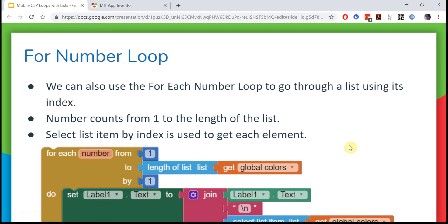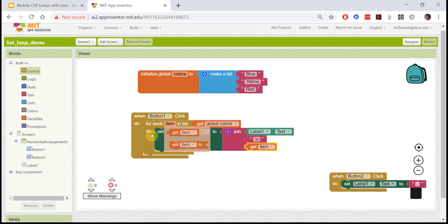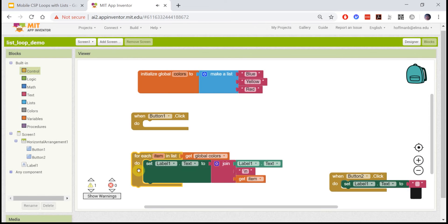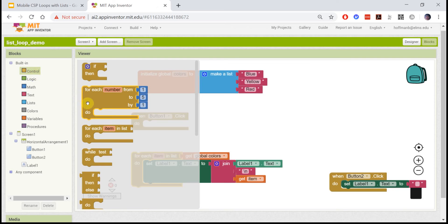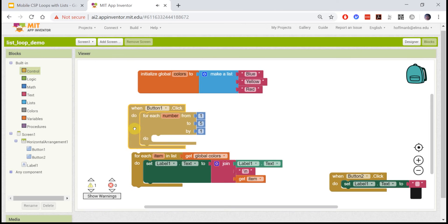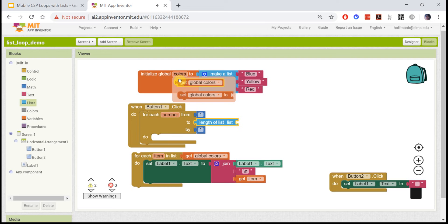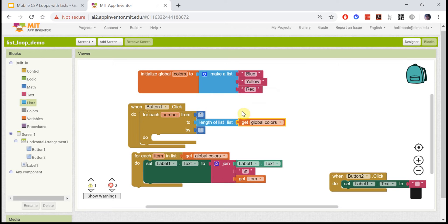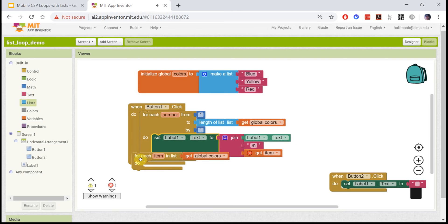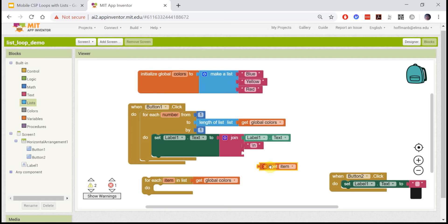Let's try this in App Inventor. Instead of the for-each item loop, we want the for-each number loop. But we don't want to visit five elements; we want to visit whatever the length of the list is. We can look in the list drawer and grab length of list and put our colors list there. For this list, since there's only three items, this loop will run three times. Then we can put our set label block, but we can't just get the item - we have to get the item at a certain index.